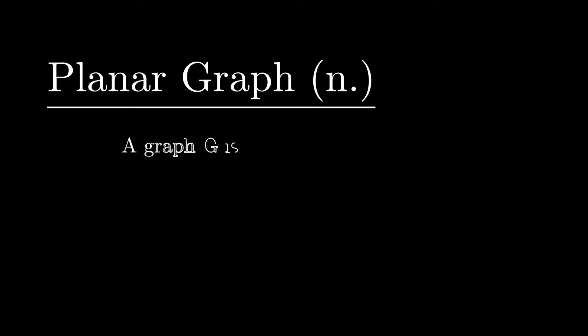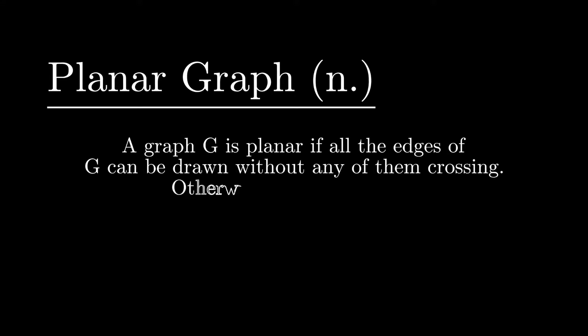We say that a graph G is planar if all the edges of G can be drawn without any of them crossing. Otherwise, G is not planar.